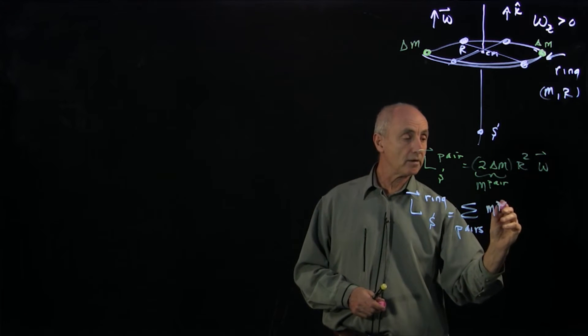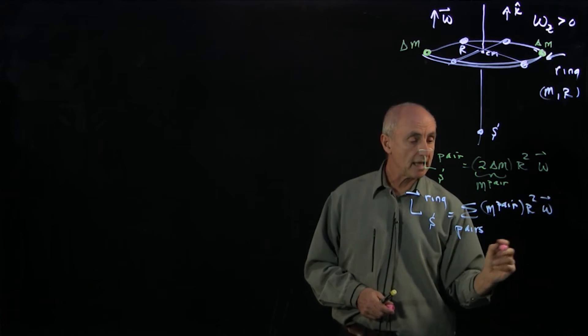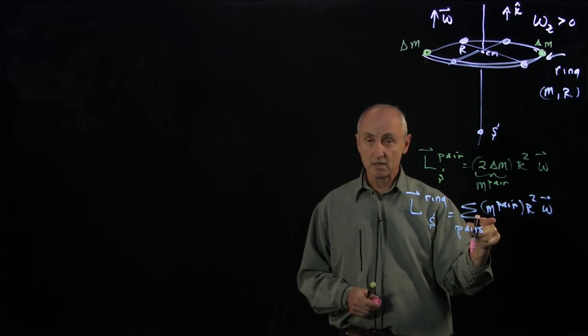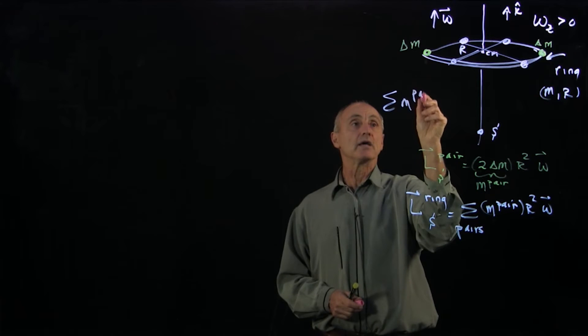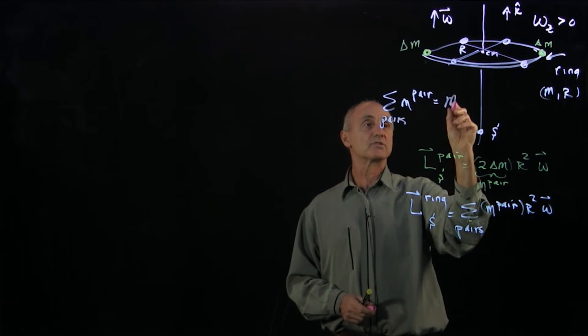of the mass of the pair times r squared omega. And r squared and omega are all constants. The total mass of the ring is just the sum over the pairs of the mass of the pair.